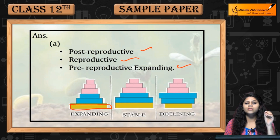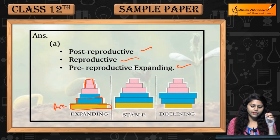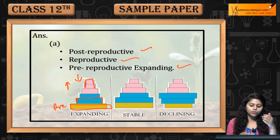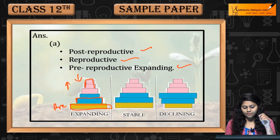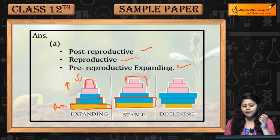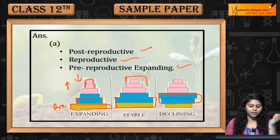In an expanding population, pre-reproductive is the largest group, then reproductive, and then post-reproductive. In a stable population, pre-reproductive and reproductive are almost equal, and post-reproductive is lower. In a declining population, reproductive is greater than post-reproductive.